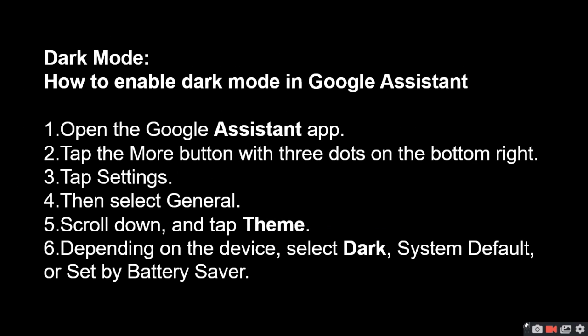Dark mode of the Google Assistant — how to enable it. Open the Google Assistant app. Tap the More button, which is the three dots on the bottom right.